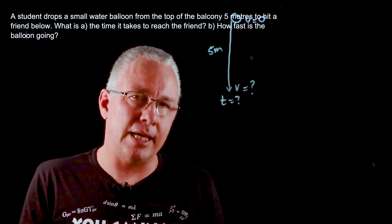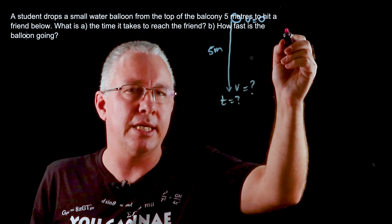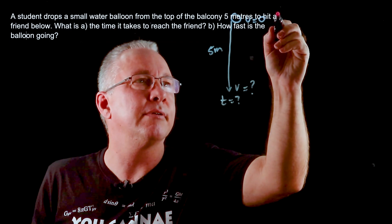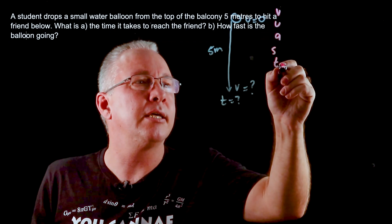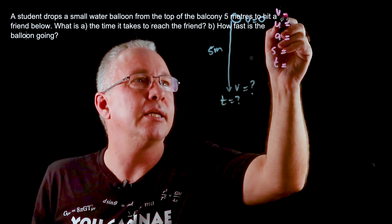Once you write down the diagram, I always ask my students to set out the variables that you are given. So I go V, U, A, S, and T, and then I simply fill in the data.